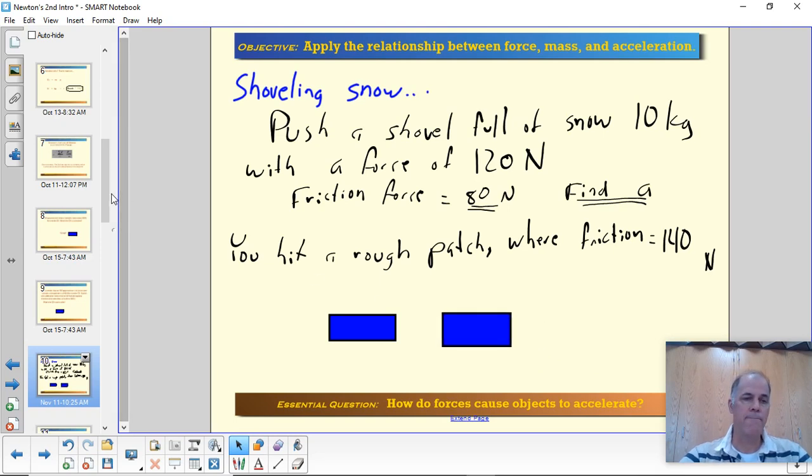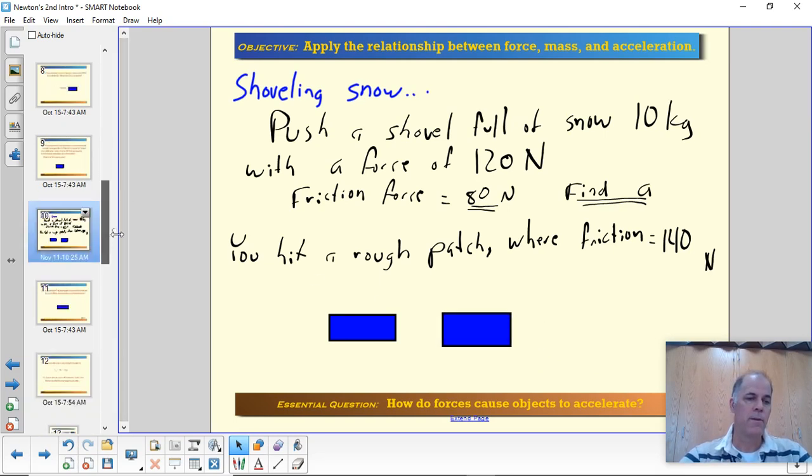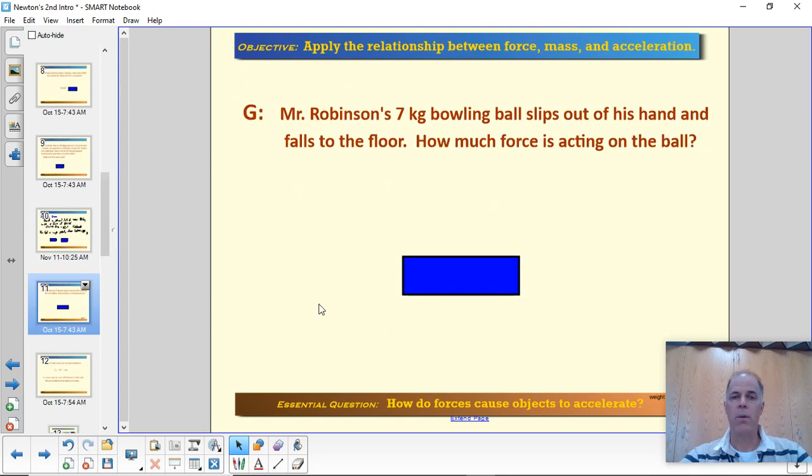Okay, let's see what else we got. All right, one more. Mr. Robinson's bowling ball, 7-kilogram bowling ball, slips out of his hand and falls to the floor. We want to know how much force is acting on the ball. I'm going to let you think about this for a moment, and then I'll give you a hint in a moment if you're stuck on how to do this. Pause it. I'll start again in a moment. 3, 2, 1.